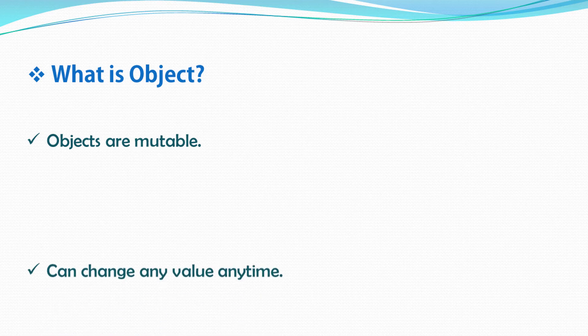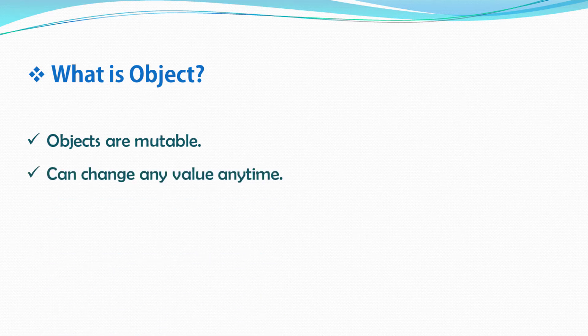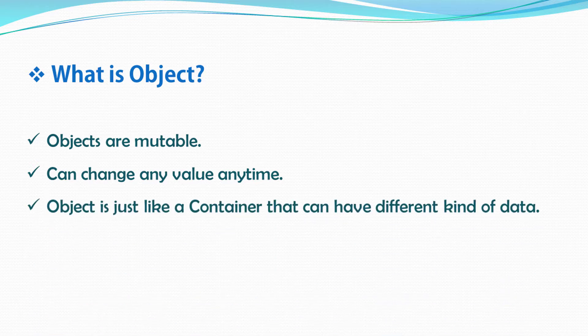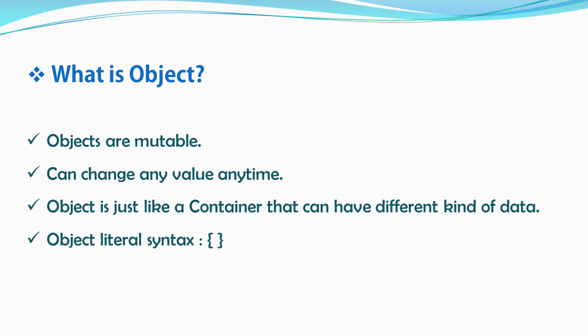Now let me first talk about what an object is. Object is not like a primitive type that is immutable and takes only one value at a time. An object can represent multiple and complex values — it is mutable, so you can change any value of an object at any time. Object type always works like a container; you can put different kinds of data in the container.